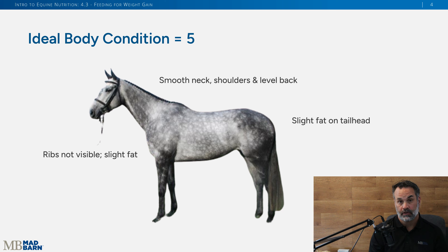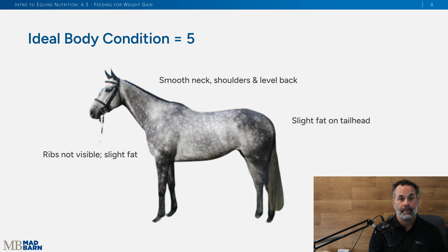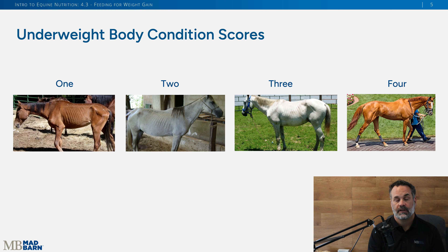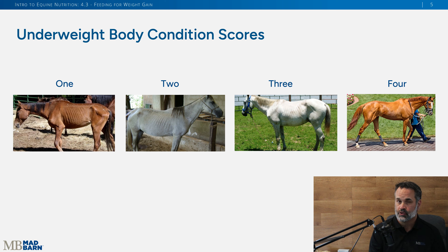The ideal body condition score for a horse is generally considered five. When you look at this horse on this slide, ribs aren't visible, there's a little bit of fat on the rib cage, a smooth neck and shoulders, a level back, and slight fat on the tail head. When we look at horses under a body condition score of five, a body condition score of one is an extreme scenario — this is a rescue horse that has to go through a careful refeeding program.